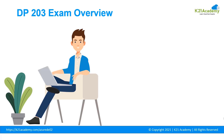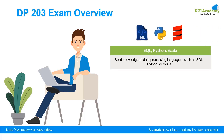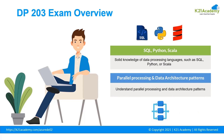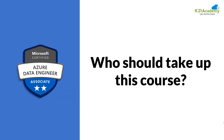Now let's get an overview of the DP203 exam. In DP200 and DP201, you didn't need to know Python or Scala. But in DP203, many learning objectives directly refer to Python or Scala. You need a solid knowledge of data processing languages such as SQL, Python, and Scala. You also need to understand parallel processing and data architecture patterns.